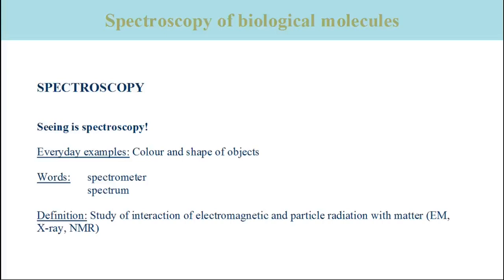An apparatus for spectroscopic studies is called a spectrometer. And a plot of a particular property of matter against wavelength, frequency, or energy of radiation is called a spectrum.